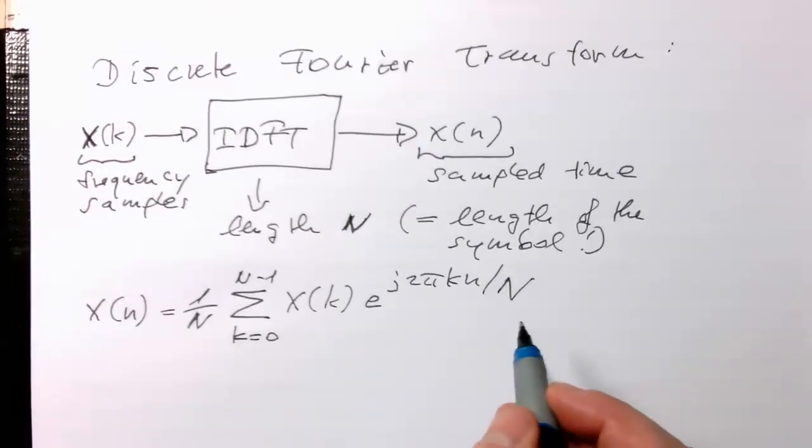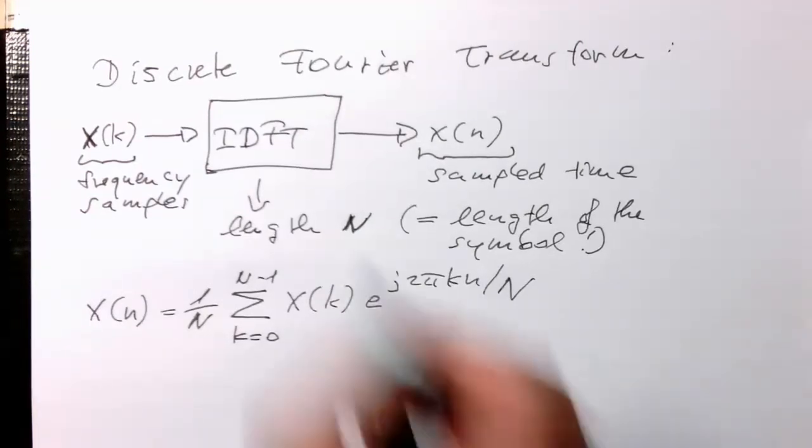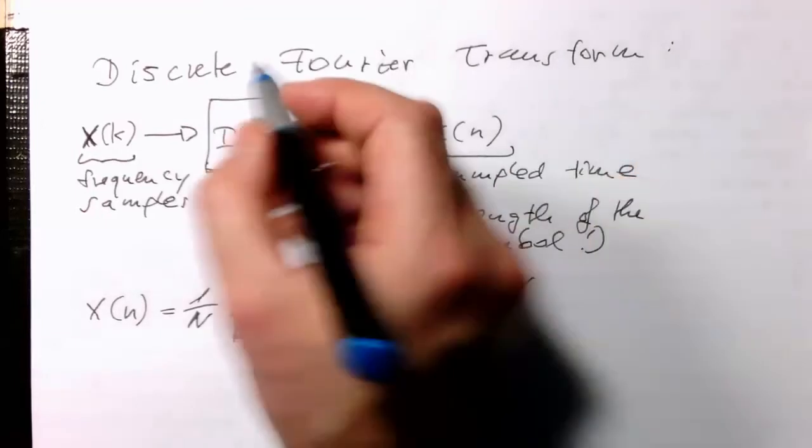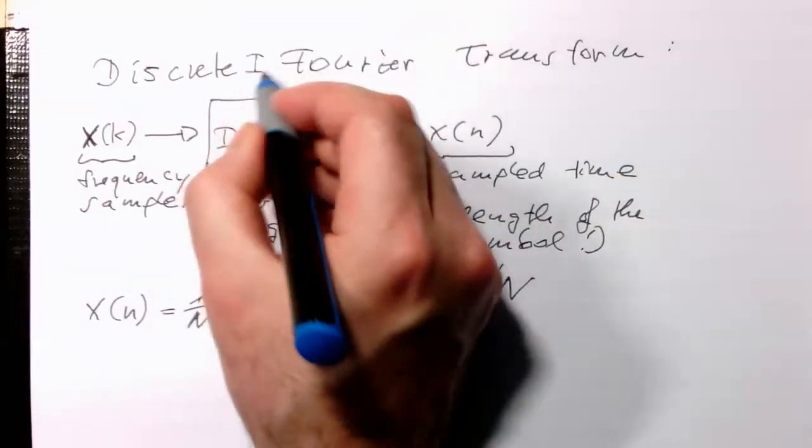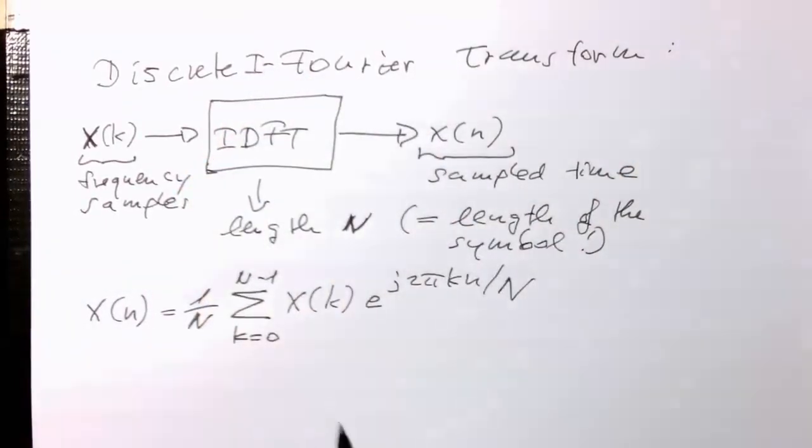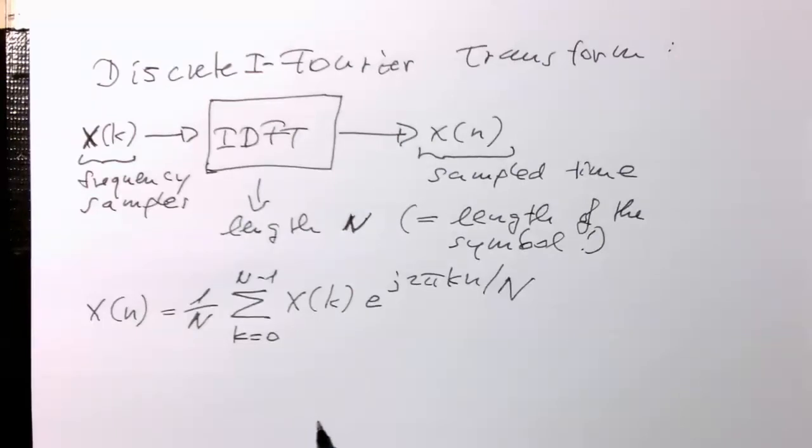So that's our discrete inverse Fourier transform. I should write this with an I, discrete inverse Fourier transform.